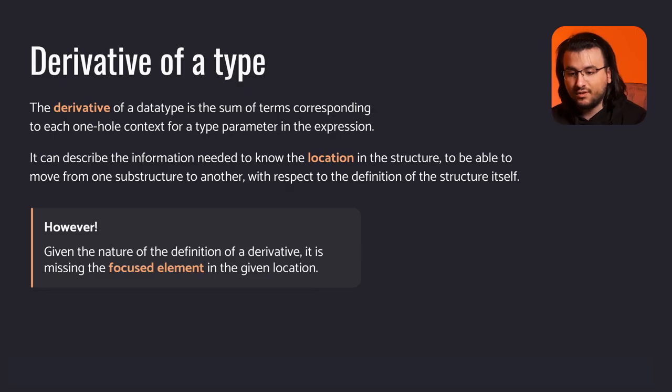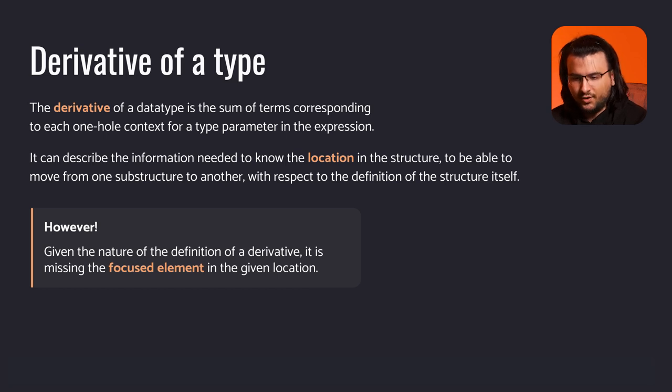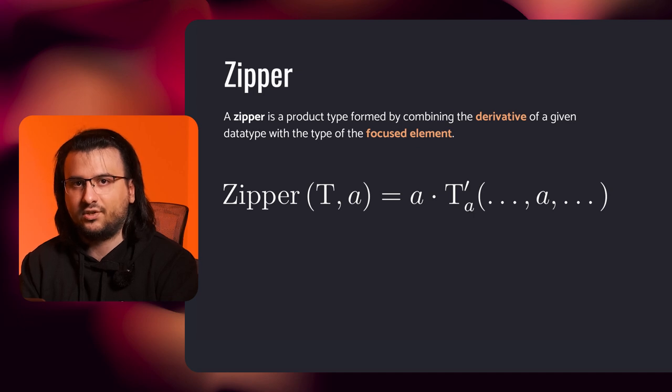At last, let's define what a derivative of a type is. The derivative of a data type is the sum of terms corresponding to each one-hole context for a type parameter in the expression. In other words, it describes the information needed to know the location in the structure — to be able to move from one substructure to another. However, given the nature of the definition of a derivative, it is missing the focused element at the given location. So let's combine the derivative of a data type with the type of the focused element into a product type. This is the definition of a zipper.